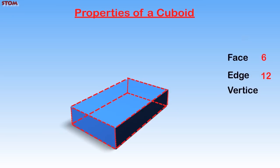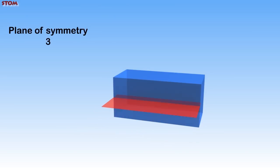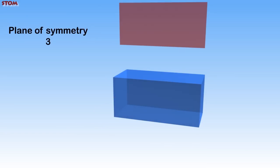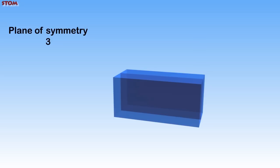Now let's take a look at the vertices. Counting, we have one, two, three, four, five, six, seven, and eight. There are eight vertices. The plane of symmetry is where it is divided into two equal halves. As shown on the screen, the cuboid has one, two, and three planes of symmetry.